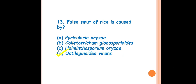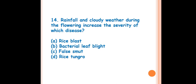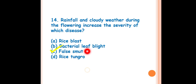Question 14: Rainfall and cloudy weather during flowering increases the severity of which disease? The answer is C — false smut of rice. If rainfall occurs at the flowering stage, that environmental condition is favorable for the development of false smut of rice, caused by Ustilaginoidea virens.